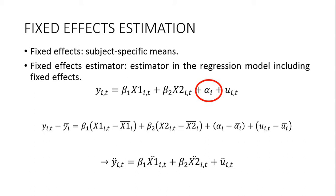If we have this unobserved time-invariant variable, the procedure is as follows. For each observation, we calculate the difference between the value of a variable for entity i in period t and the average value of that variable for that entity over the entire period. It is similar to the between model, but in the between model we regress the averages, whereas in fixed effects we regress the differences between variable values and their averages.